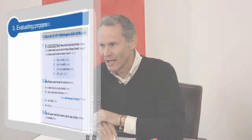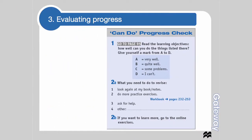When thinking about grammar or any language learning in general, it's really important that we are able to evaluate our own progress. Firstly, it's always a good idea to try and remember to set yourselves objectives that can be met. As we saw in the first video, it's important to have a timetable and to set ourselves a target. Set yourself a clear objective when you're learning grammar or anything.